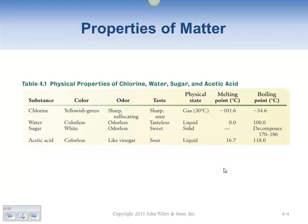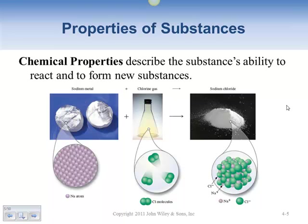Chemical properties, on the other hand, talk about how substances react and how they form new substances — what happens when they create a new compound. A chemical property is something that will change the nature of that particular substance. An example is sodium metal, a shiny lustrous metal, combined with chlorine gas to make sodium chloride salt. Those are an example of chemical properties and a chemical change.